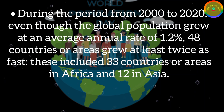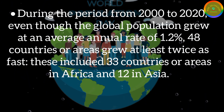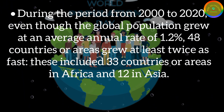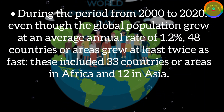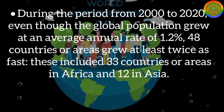During the period from 2000 to 2020, even though the global population grew at an average annual rate of 1.2 percent, 48 countries or areas grew at least twice as fast. These included 33 countries or areas in Africa and 12 in Asia.